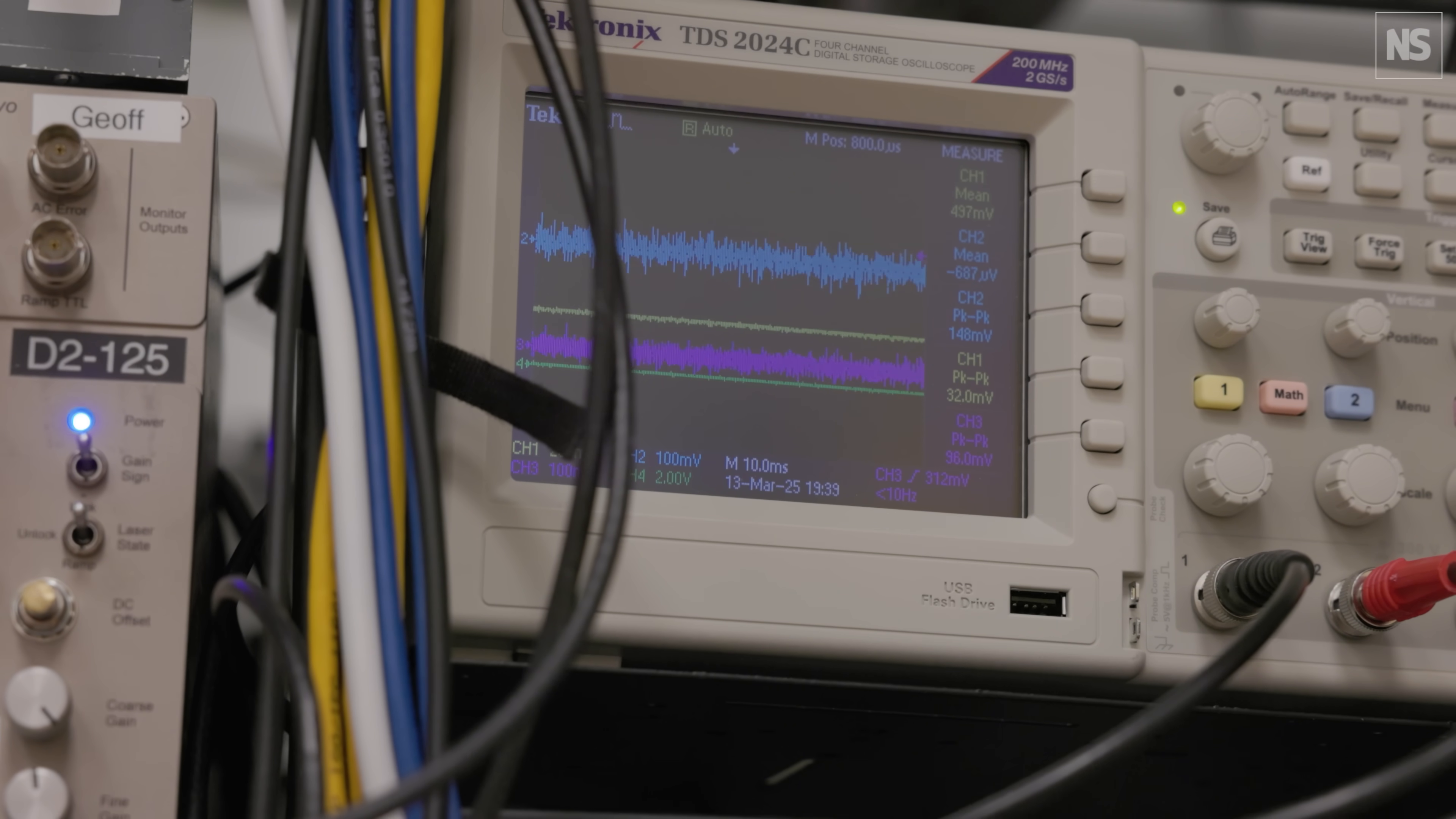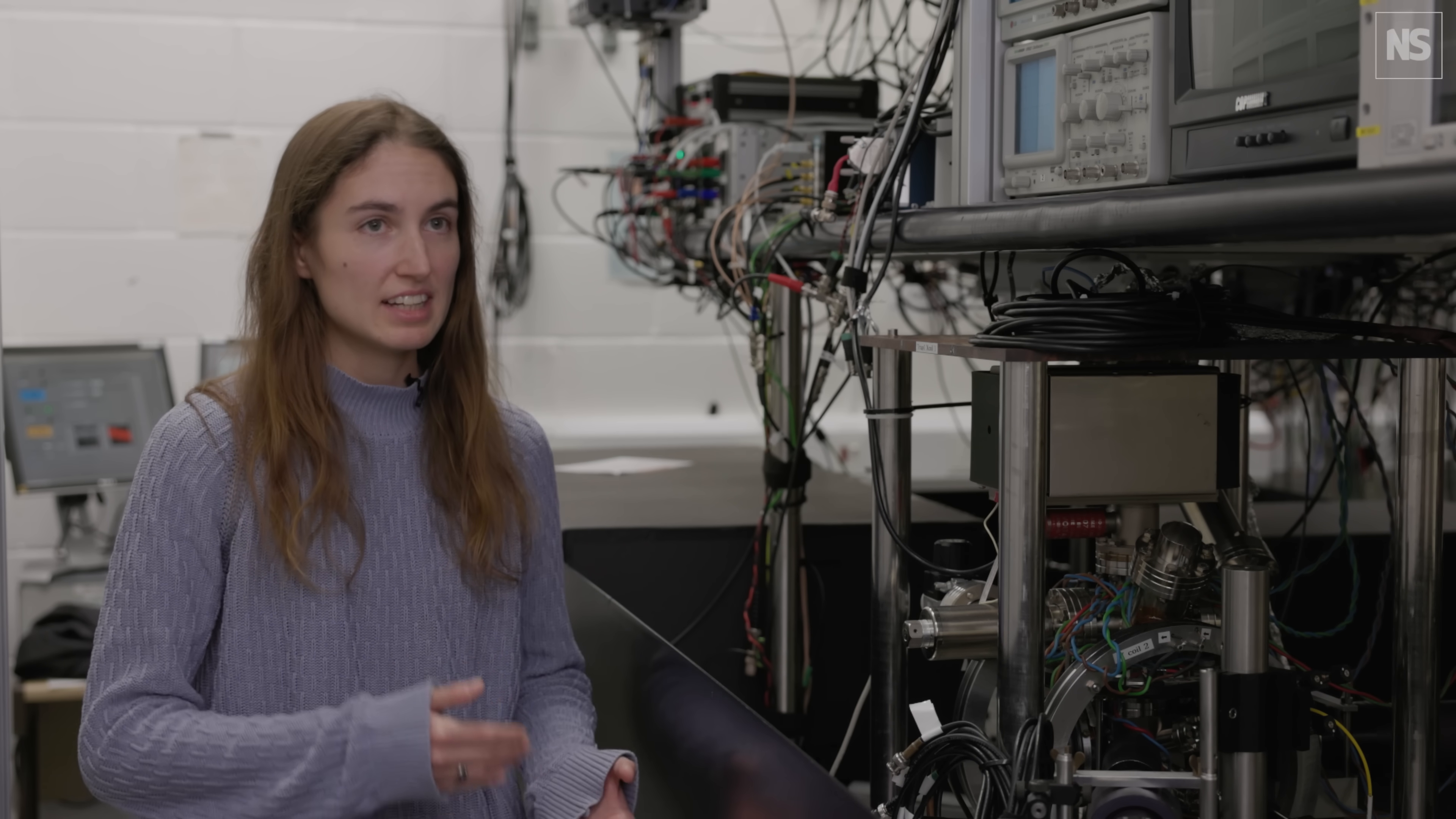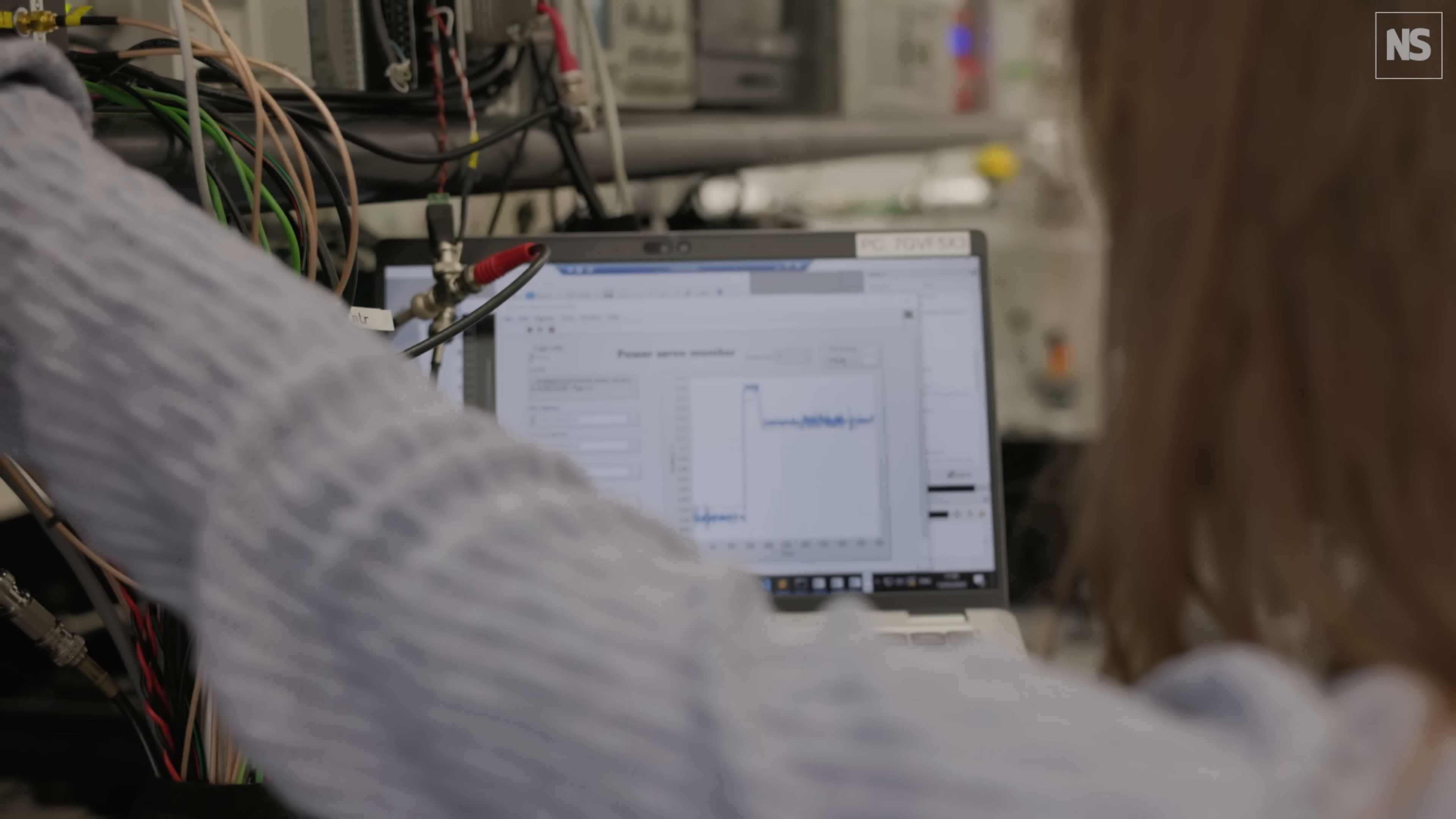And so if we compare an optical clock that is very sensitive to the variation of the fine structure constant, and another one that is not sensitive over time, we will be able to see if there is a slow drift in the frequency ratio or an oscillation. This would be related to a possible variation of the fine structure constant.